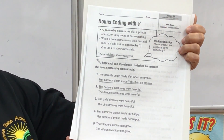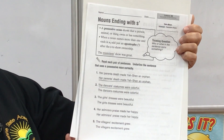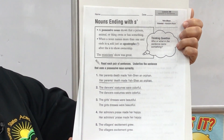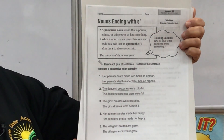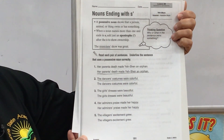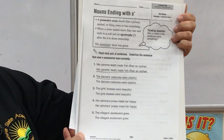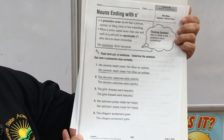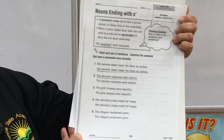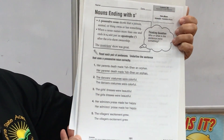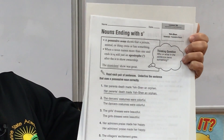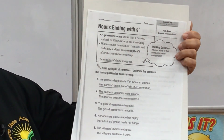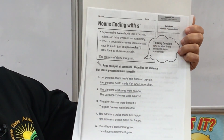As you can see, it's the same sentence but the difference is the apostrophe comes at the end after 'parents' — you have the S and then the apostrophe. Number two: 'The dancers' costumes were colorful.' Again, same sentence, but the difference is after the S you see the apostrophe.